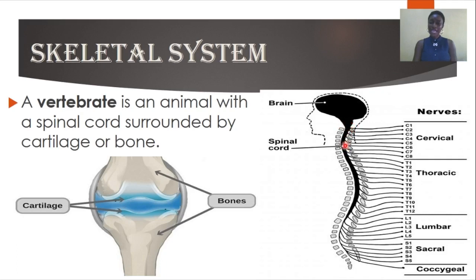Inside the vertebral column — also known as the spine — you have a network of nerves. Take note: the spine and the spinal cord are different. The spine is the vertebral column itself. Inside the spine, the network of nerves that runs from the brain to other parts of the body is what is known as the spinal cord. So we now know the difference between the spinal cord and the vertebral column.